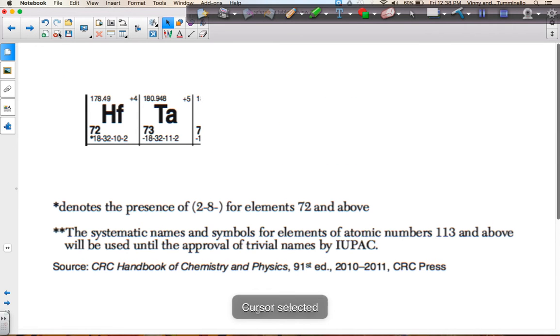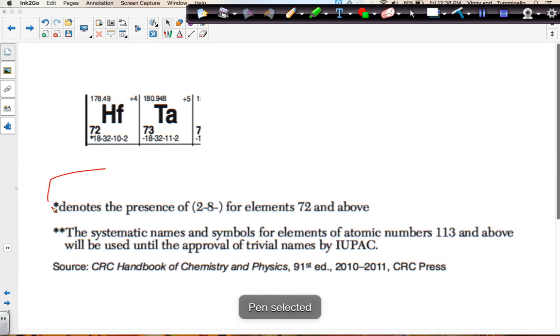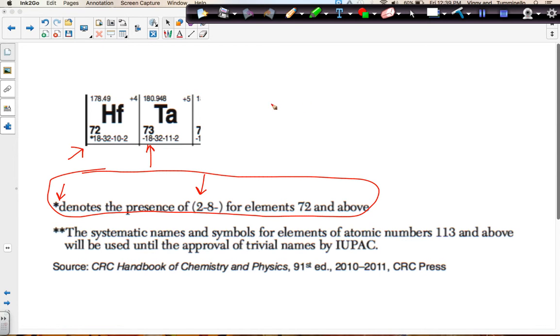I also wanted to point out that at the bottom of the table that we have an asterisk here. And it says that there is an asterisk and it's on element number 72. There is actually a 2-8 for the electron configuration for every element, element 72 and above. That means any of the configurations that you see that start with 18 really have a 2-8 in front of them.